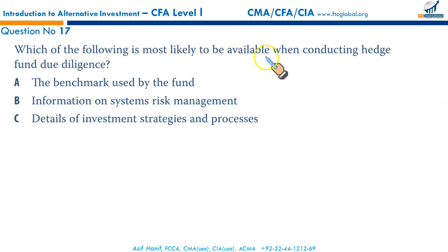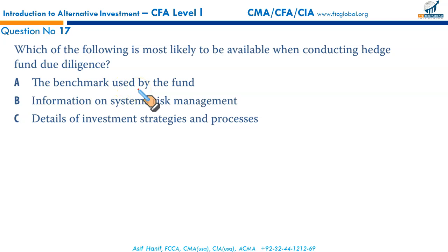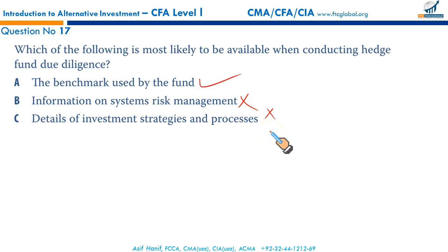Which of the following is most likely to be available when conducting hedge fund due diligence? The benchmark used by the fund — correct. When conducting hedge fund due diligence, it should be possible to identify what benchmark has been used to assess performance. Hedge funds consider their strategies, systems, and processes to be their property, and are unwilling to provide much information about these to potential investors, so B and C are not correct. A is the right answer.